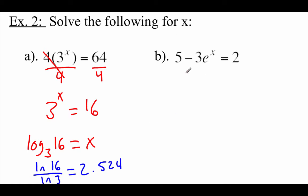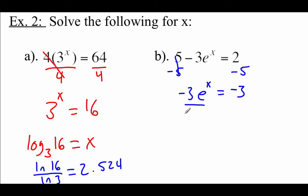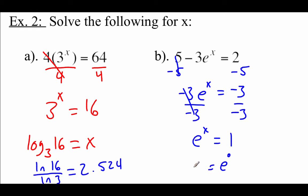Similarly on the next one, there's extra work before dealing with the exponential piece. Subtract 5 from both sides to get negative 3 times e to the x equals negative 3. Divide both sides by negative 3 to get e to the x equals 1. We can use the one-to-one property since e to the zero power equals 1, so e to the x equals e to the zero, meaning x equals 0.